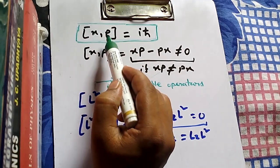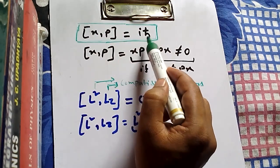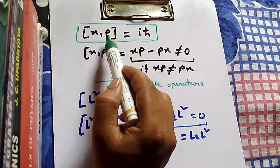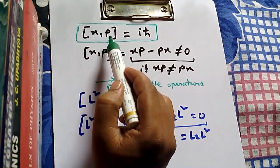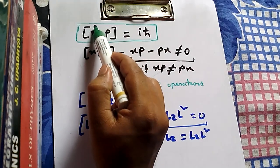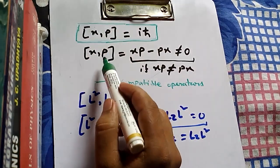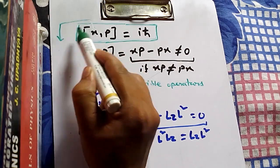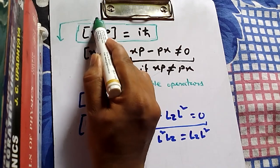But when two operators do not commute with each other — which we determine because their commutation is a nonzero value — then those two operators are called incompatible operators, or non-compatible operators.